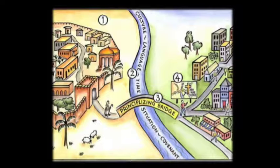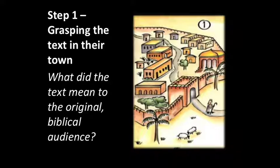Last week and this week—maybe next week—we're on step one: grasping the text in their town. We're asking, what did this passage or verse mean to the original audience? For example, if we go to a verse in Genesis that says, 'I want you to sacrifice your son on an altar to me,' we can't just say God wants us to go sacrifice our son. It was specifically for Abraham, tied to that situation. Before we cross a principle and apply it to ourselves, we have to ask: what did the text mean to the original biblical audience?